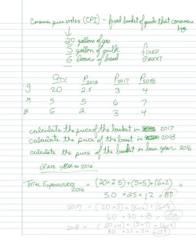In 2016, which is going to equal 20 times 2.5 plus 5 times 5 plus 6 times 2, which equals 87. So that's how much my basket cost completely in 2016.